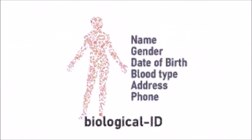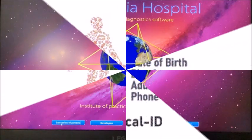Required information that determines your Quantum ID are name, gender, date of birth, blood type, address, and phone.